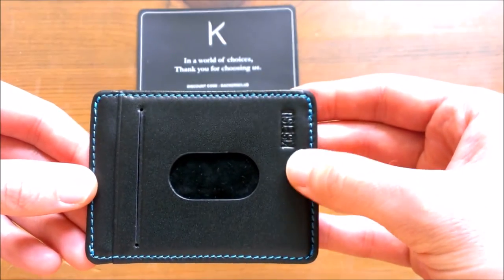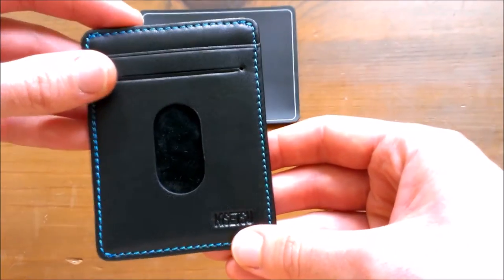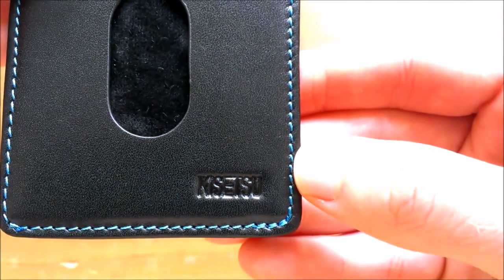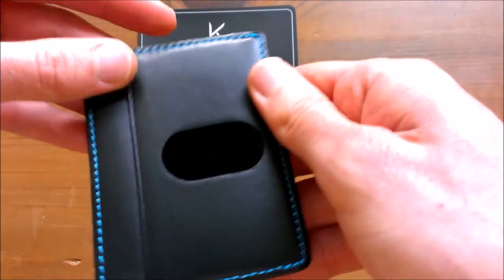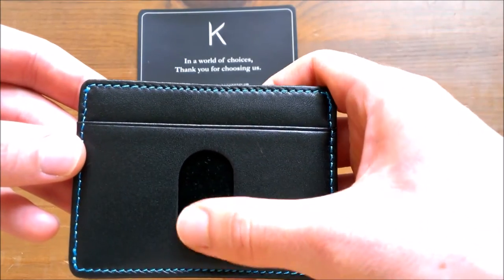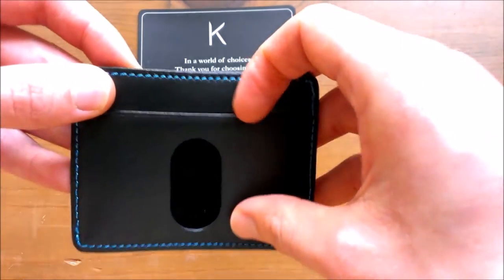We can see that the Kasetsu is quite a simple design. It's got black leather, and all of them have the same black leather. It's just the stitching that's different on the other colors. It's quite a soft leather, so it's quite flexible and pliable as you'll see as we go on.